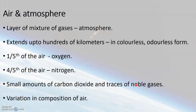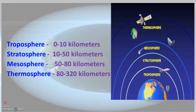Now let us see what are the different layers of the atmosphere and how the composition of air is different in each of these layers. As you have already learned, the different layers of the atmosphere are troposphere, stratosphere, mesosphere, and thermosphere.